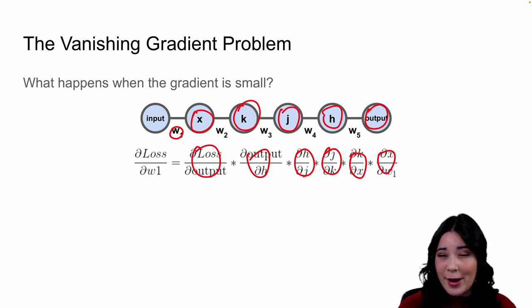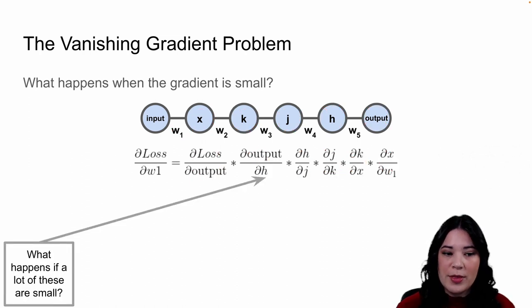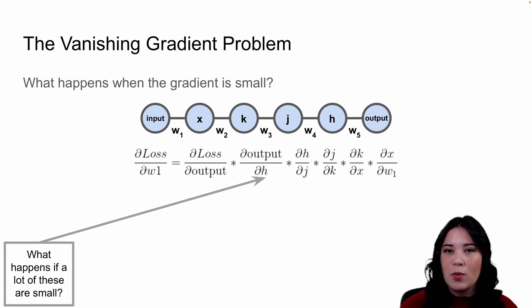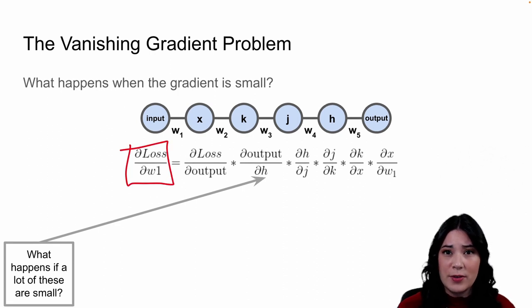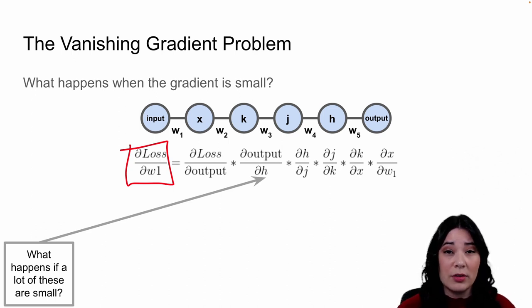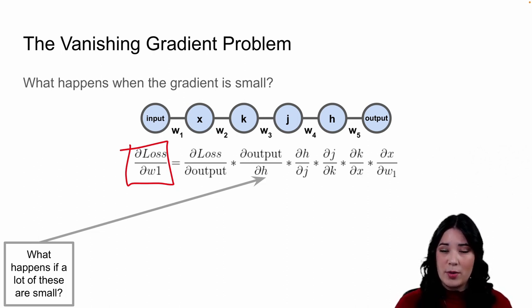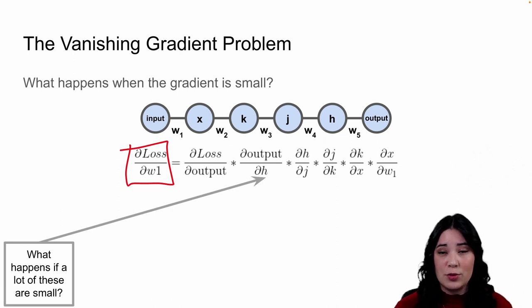This is a very simple network with only one node per layer and no activation functions yet. But when we think about these long chains of partial derivatives being multiplied together, ask yourself: what would happen if a lot of these values were very small — say less than one? If we multiply a bunch of very small numbers together, eventually our final gradient is going to be very small and might even approach zero. And if our learning rate or gradient are zero, then our parameters are going to stop updating. This is the vanishing gradient problem — if our gradient gets very small, our network is not going to be able to learn.